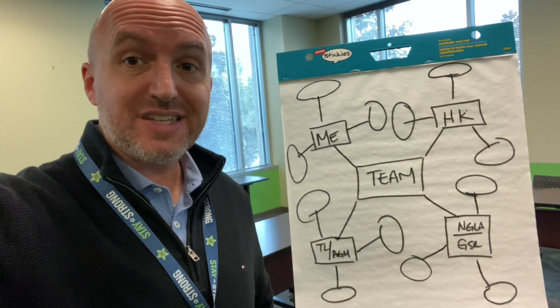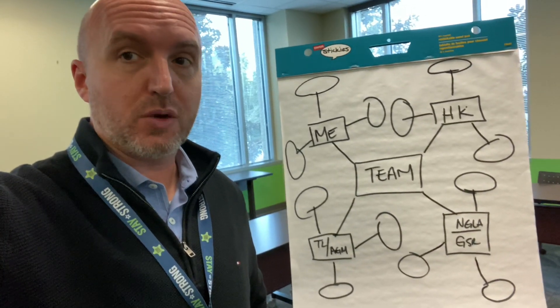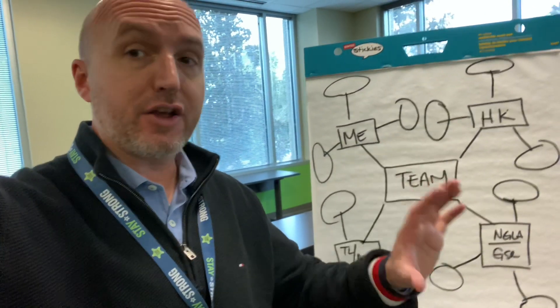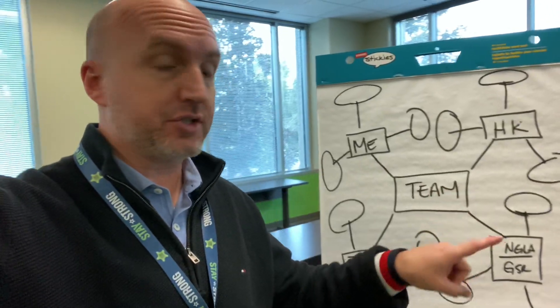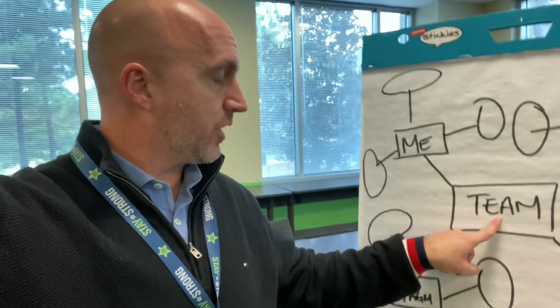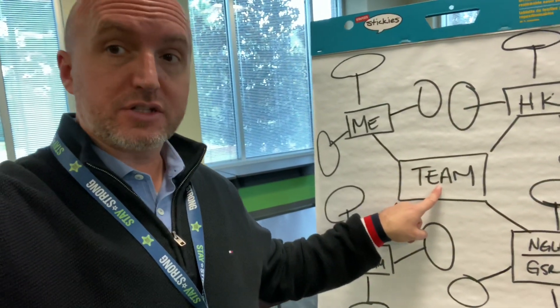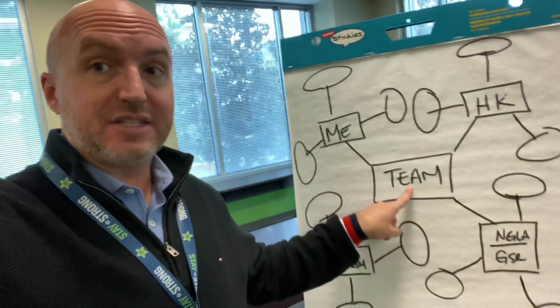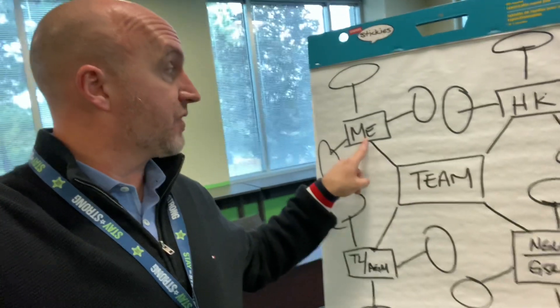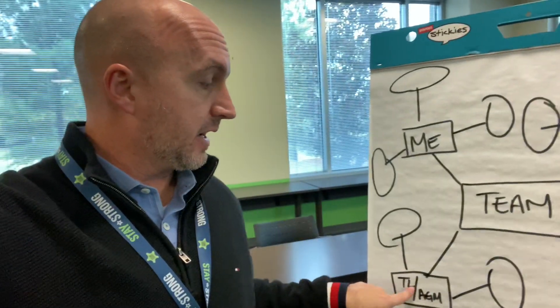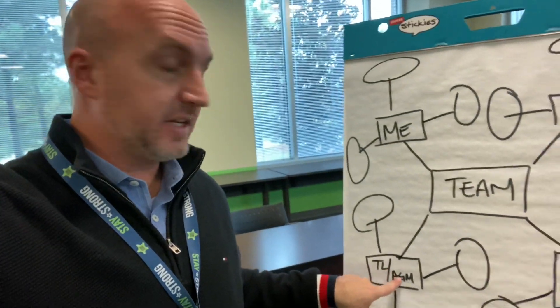For this activity, we're going to have very open-ended questions. I'm starting here with the properties team. We're going to talk about the roles on that team: the ME, the housekeeper, the NGLA, GSR, team lead, and AGM.